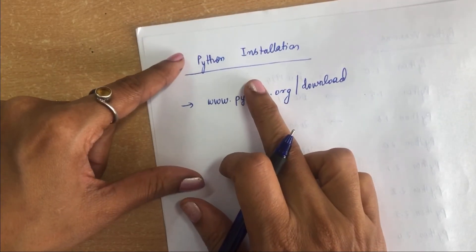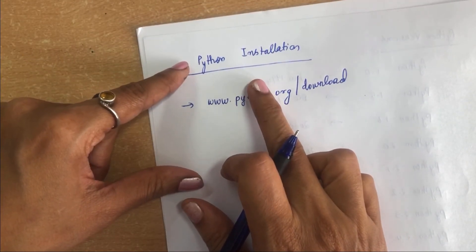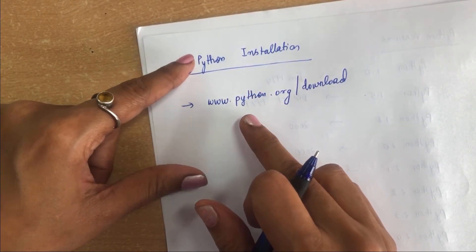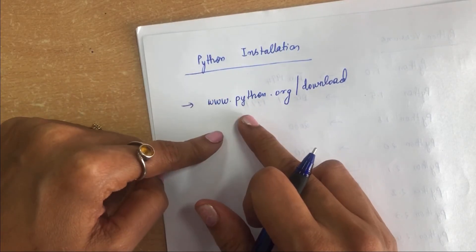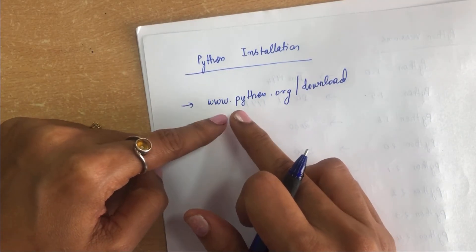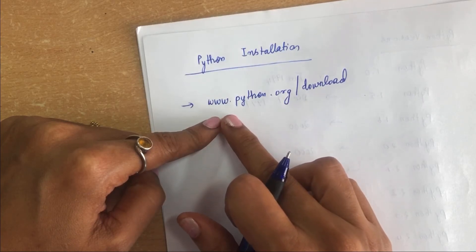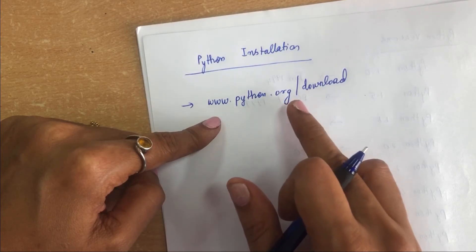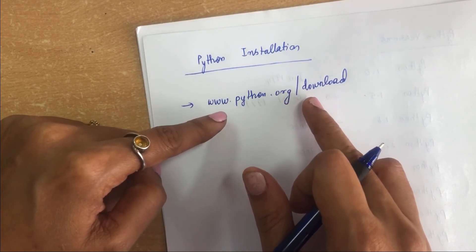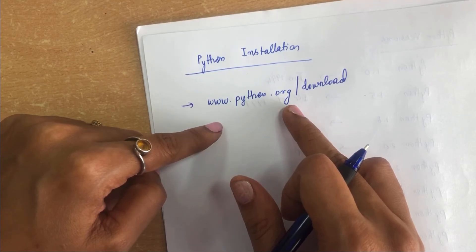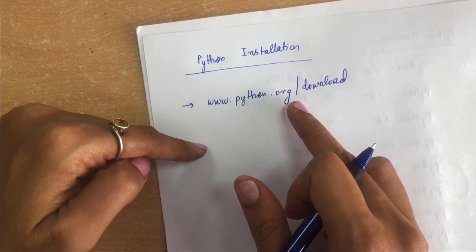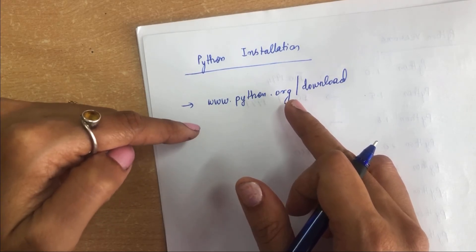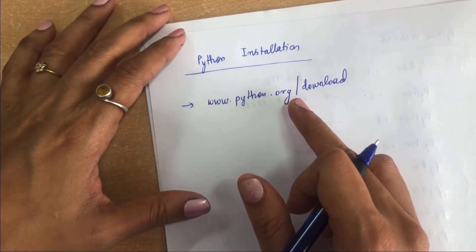Now we will see how to install Python on your system. In order to become a Python developer, you need to install Python first. Go to the website www.python.org/download and download the recent release of Python, then install it on your system by clicking on it.